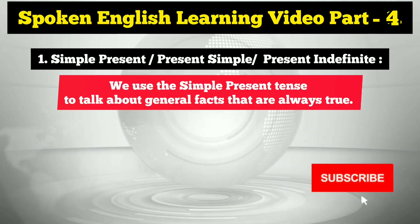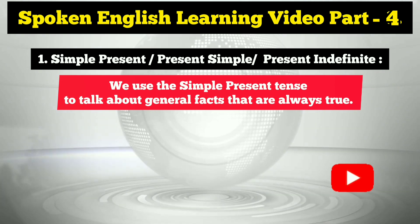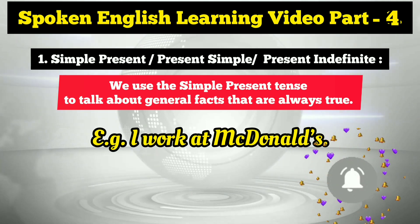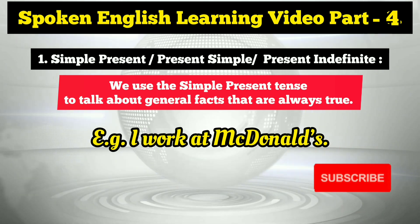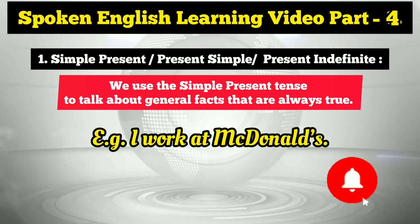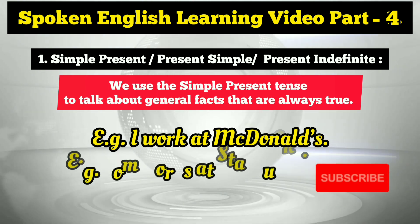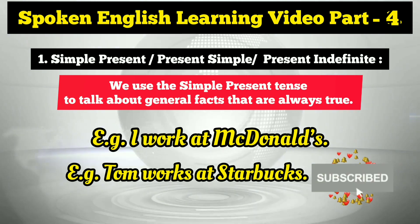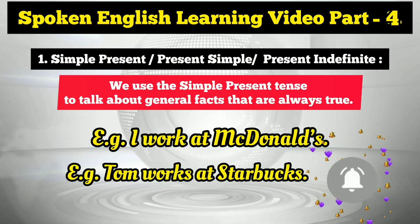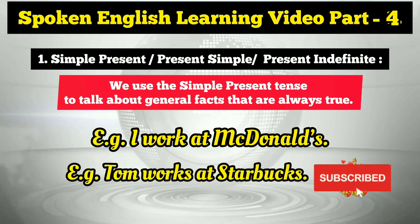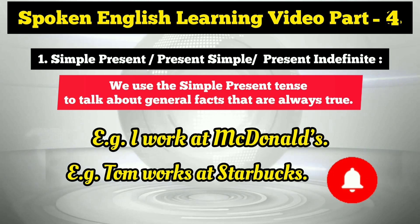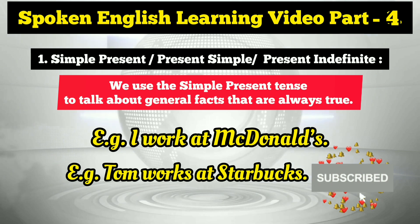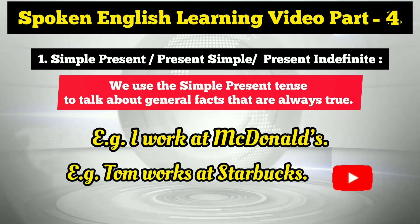We use the simple present tense to talk about general facts that are always true. For example: 'I work at McDonald's' — here I'm talking about a fact using simple present. When it comes to third person singular number, you add 's': 'Tom works at Starbucks.' So 'I work at McDonald's' but 'Tom works at Starbucks.'